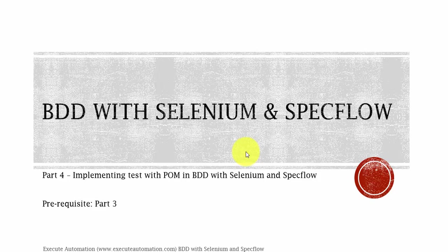In the last part, which is part 3, we wrote a simple test using feature files, step definitions and also with Selenium. That was a plain and very simple test. We didn't use a lot of objects there, so the test was not very complex and there was no need for writing a page object model for them. But here we are going to discuss implementing the test using page object model in BDD with Selenium and SpecFlow.